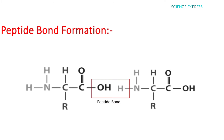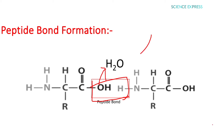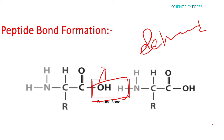Now we discuss how peptide bond formation occurs in amino acids. One amino acid attaches to another amino acid by a peptide bond. When two amino acids are close together, they release one water molecule (H₂O) — this process is called dehydration synthesis. The H₂O is removed from the two chains, and the peptide bond is formed.